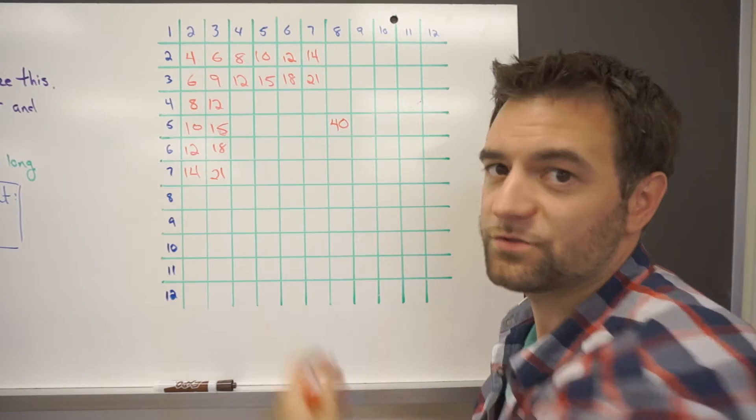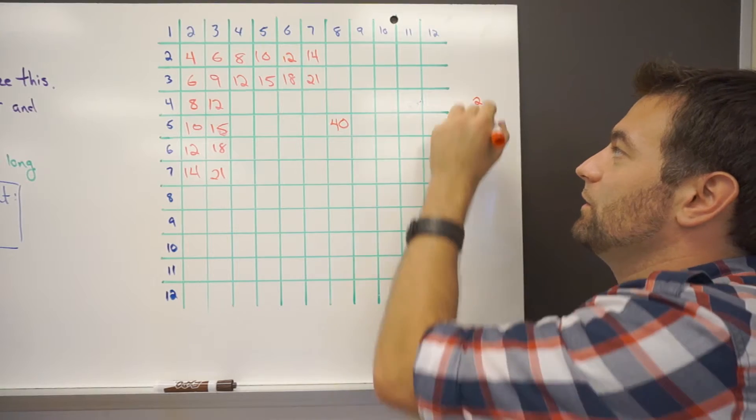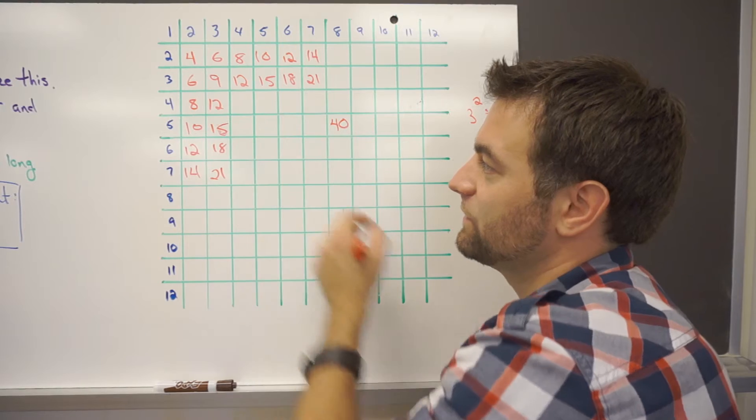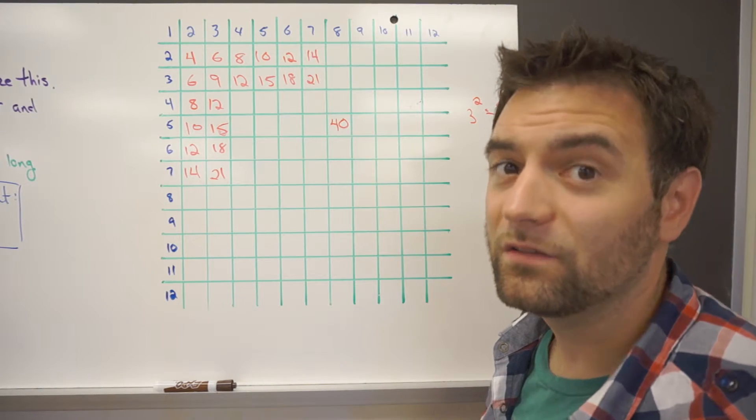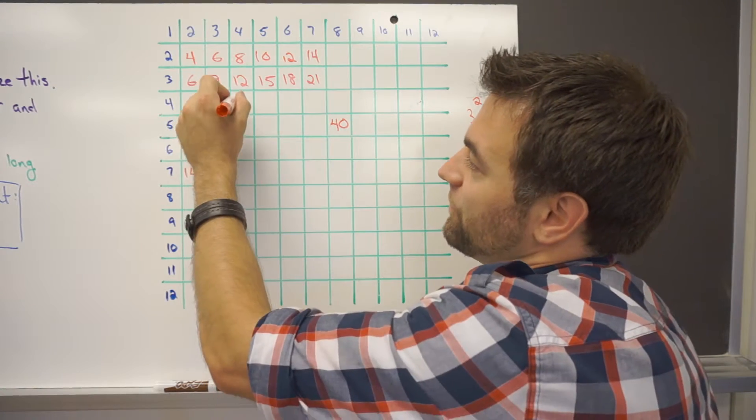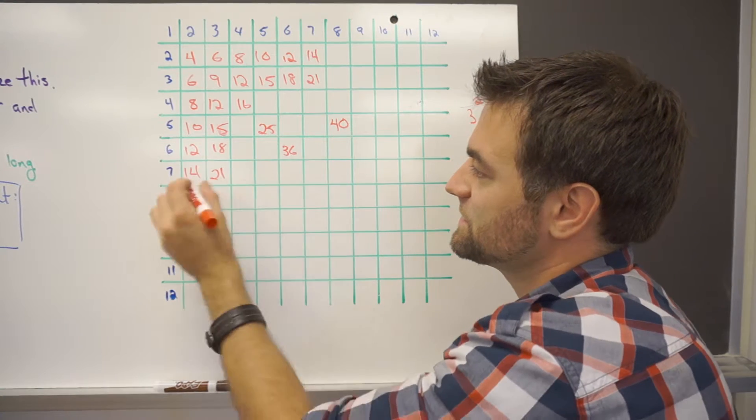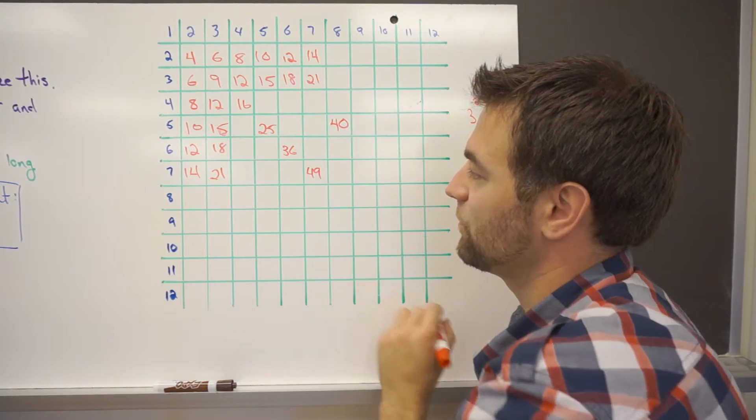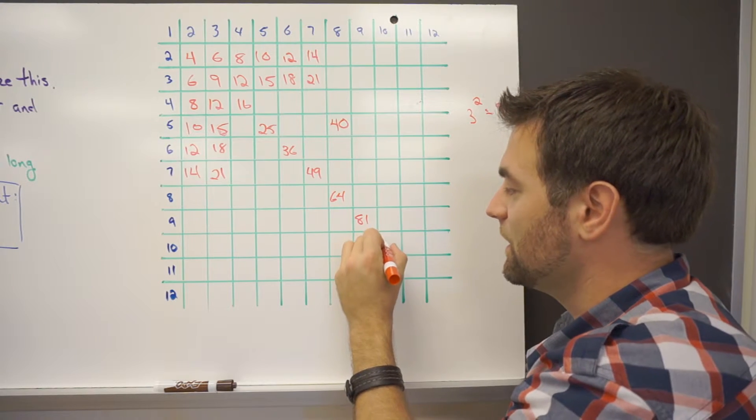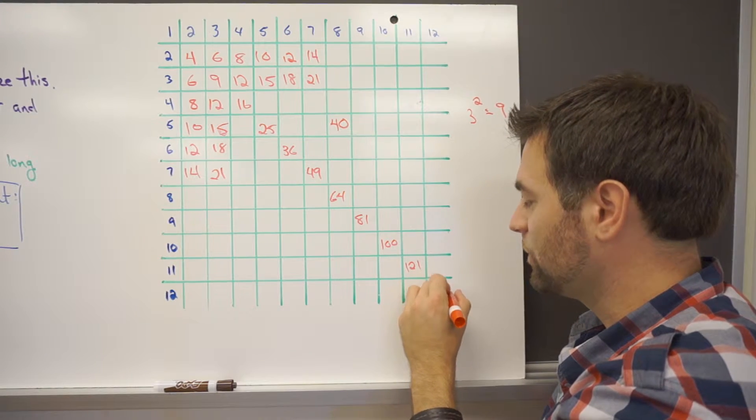Notice these are all perfect squares. Those are numbers multiplied by themselves. So that's like 3 squared, which is 9. So 3 times 3 is 9. All this diagonal here is all the perfect squares. Numbers, again, that are really useful. We use a lot of perfect squares in this course. 4 times 4 is 16. 5 times 5 is 25. 6 times 6 is 36. 7 and 7 is 49. 8 squared is 64. 9 squared is 81. 10 squared is 100. 11 squared is 121. And 12 squared is 144.